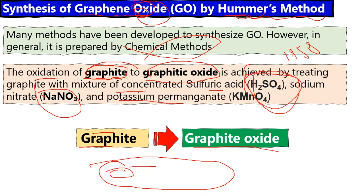People use other oxidizing agent systems instead of KMnO4, H2SO4, and NaNO3.